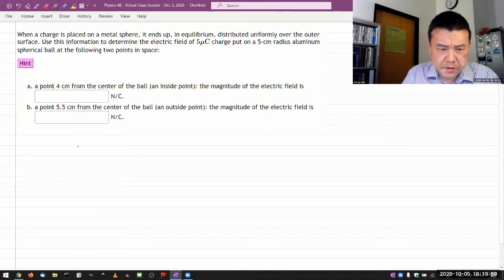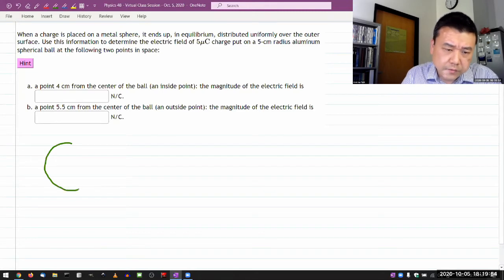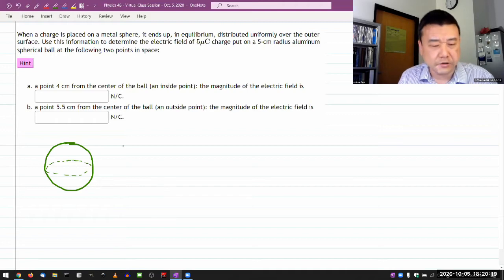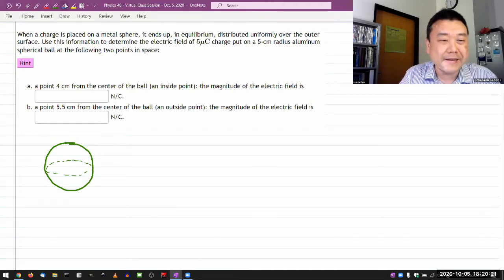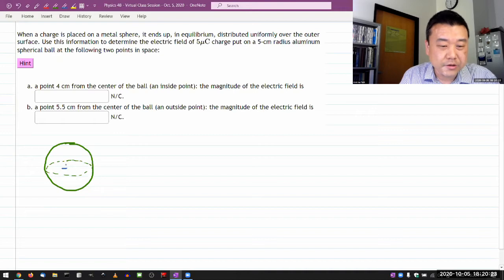Let me just start by drawing some pictures. This is kind of how I read up questions too. So I have a metal sphere. And the question doesn't say it's a hollow sphere, but when it's a conductor, it actually doesn't matter. It says that when you place charges on it, that this charge in equilibrium ends up distributed uniformly over the outer surface.